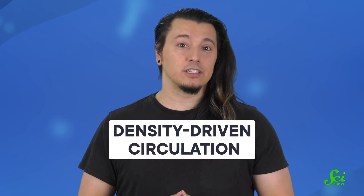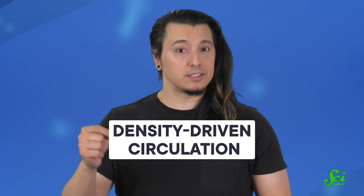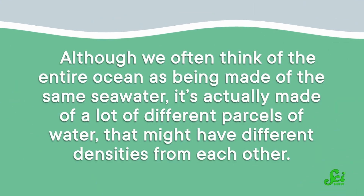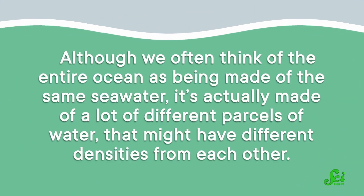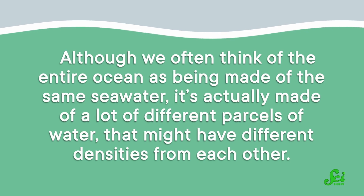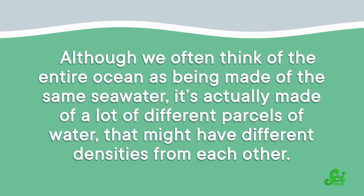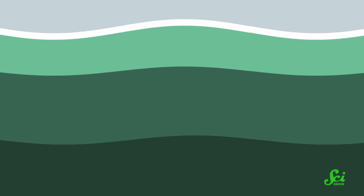The Labrador Sea brings oxygen to the deep through what's called density-driven circulation, or the movement of seawater based on its density. Although we often think of the entire ocean as being made of the same seawater, it's actually made of a lot of different parcels of water that might have different densities from each other. And just like oil and water, seawater tends to separate out into layers based on different densities.